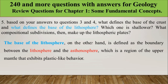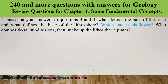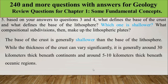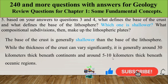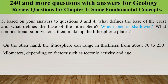The base of the lithosphere is defined as the boundary between the lithosphere and the asthenosphere — a region of the upper mantle showing plastic behavior. The base of the crust is shallower, generally around 30 km in continental regions and around 5–10 km in oceanic regions, whereas the lithosphere can range in thickness from tens to over 200 km.